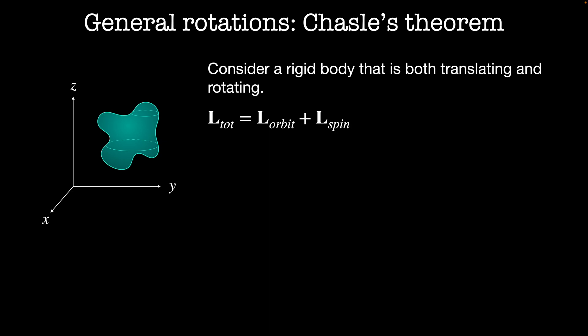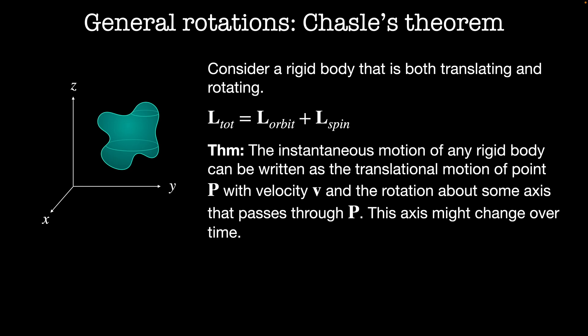In that description, we made the assumption that the rotational component always passes through the center of mass. But what if that isn't the case? Chasle's theorem says that we can decompose the angular momentum in the same way. Chasle's theorem states that the instantaneous motion of any rigid body can be written as the translational motion of a point P at a velocity v and the rotation about some axis passing through P. But this axis might change over time.